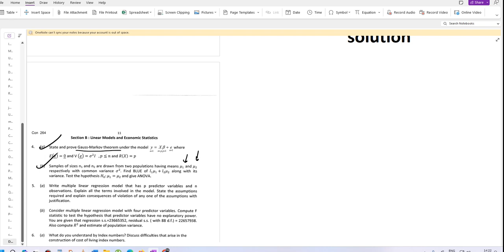Which is H0: mu 1 equal to mu 2, and given ANOVA. First, BLUE of the linear ANOVA estimator and its variance - let x1 bar and x2 bar be the sample means of the two populations with respect to sample sizes N1 and N2 respectively.